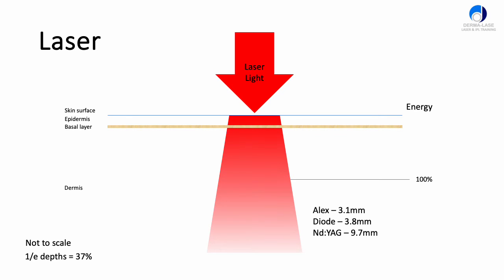That's quite deep. Again, these are the 1/e depths — the 37% depths. The depth of penetration is due to anisotropy and how widely the beam spreads out. If the anisotropy is wide, then it can't get too deep into the skin. If it has what we call forward scattering anisotropy, it can penetrate much more deeply, and the red and infrared lights can do this.